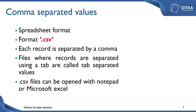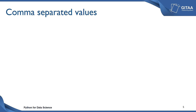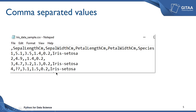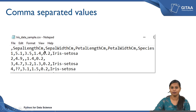The .csv files can also be opened with Notepad or Microsoft Excel. Let us see how it looks whenever we open the comma separated values in Notepad. This is how it will look like whenever you open the .csv files using Notepad. You see all the records here, but you would not be able to differentiate between which is the row and which is the column, and which cell belongs to which variable. That is the problem with viewing the .csv file using Notepad.